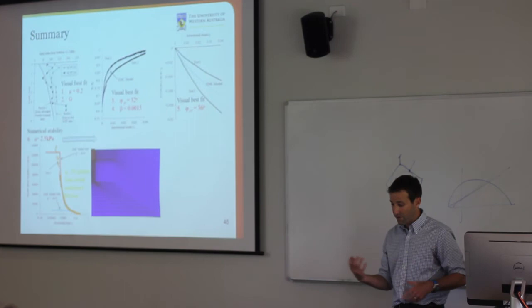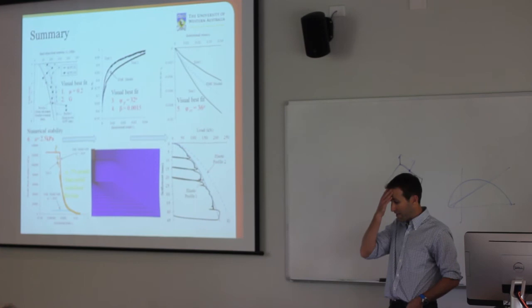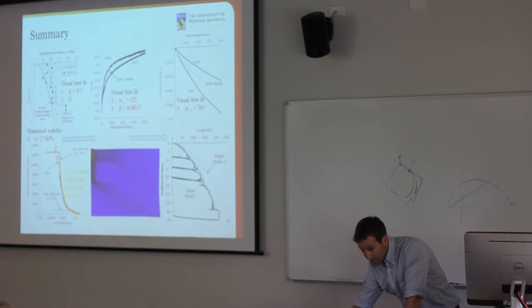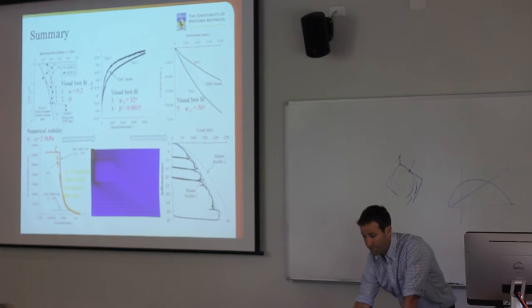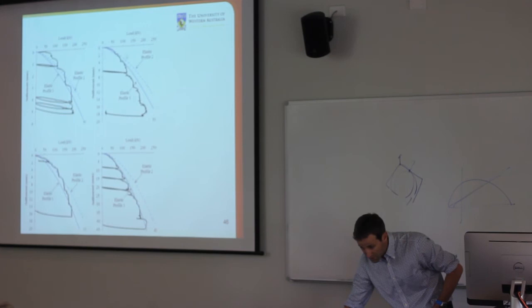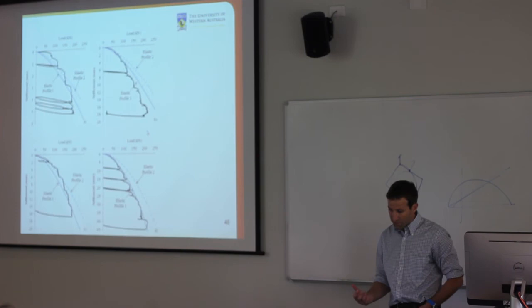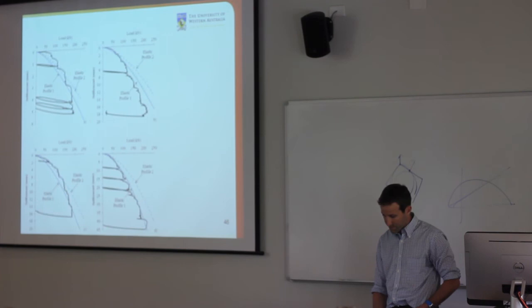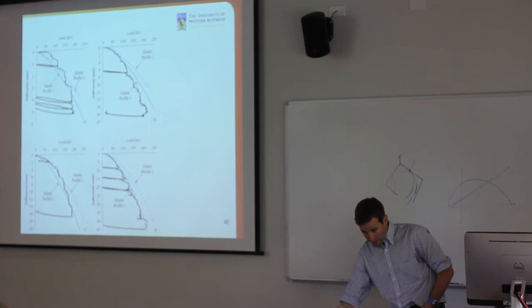The response for footing number 4: the two elastic profiles gave different stiffness — Profile 2 from in-situ seismic cone is stiffer, giving a stiffer response. Overall a pretty good match following this process. Looking at all four footings together — footings 1, 2, 3, and 4 — overall a reasonable match to most of them. Footing number 2 is slightly under-predicted in settlement. The two profiles more or less bound the results. Footing number 1 is the wide one, footing number 4 is the narrow one.